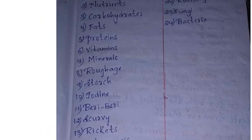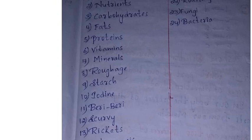Eighth one is 'roughage' — R-O-U-G-H-A-G-E. Next one is 'starch' — S-T-A-R-C-H. Tenth one is 'iodine' — I-O-D-I-N-E. Eleventh one is 'beriberi' — B-E-R-I-B-E-R-I. Twelfth one is 'scurvy' — S-C-U-R-V-Y.